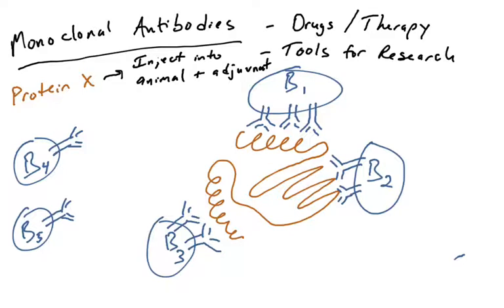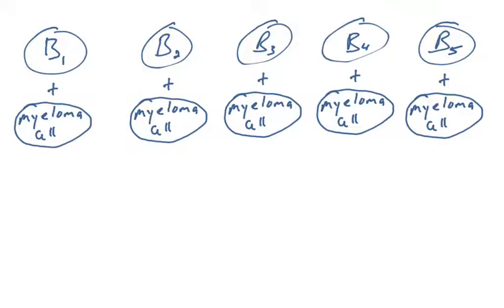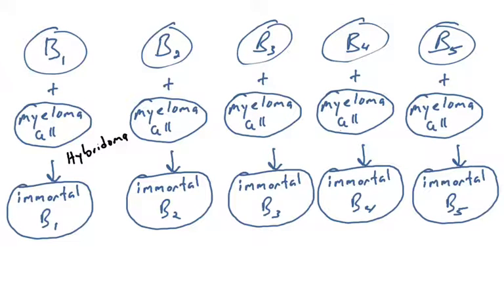These cells are not useful if they're still in the animal, so scientists will extract plasma cells from the animal and grow them in the lab. But there are two problems: these plasma cells may not live forever, and we don't know which ones make useful antibodies among the many isolated. So the B cells are fused with a type of cancer cell known as a myeloma cell. Fusing the B cell with the myeloma cell produces something called a hybridoma cell.